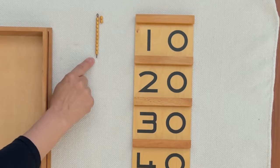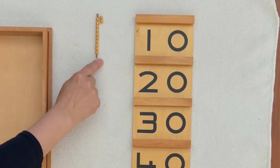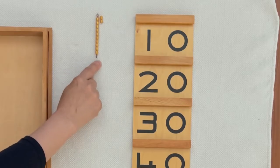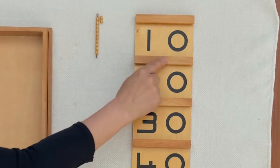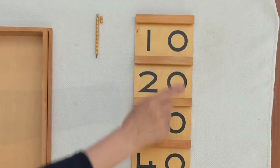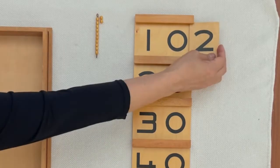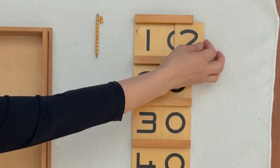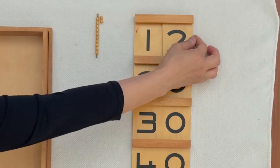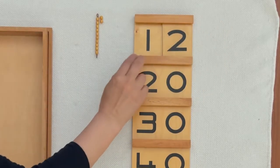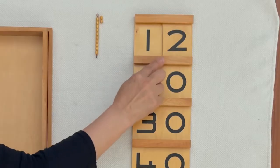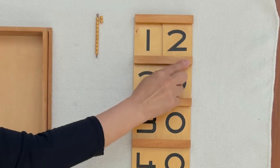One ten, two is twelve. This is how we write twelve.